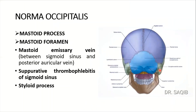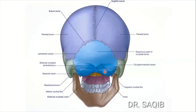The mastoid process is also noted here. Additionally, the styloid process of the temporal bone is visible in this view, though it is not labeled in all pictures. The structures attached to the styloid process are collectively called the styloid apparatus, which will be studied in detail with the norma lateralis.